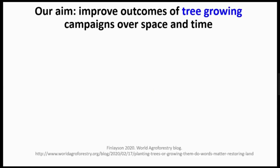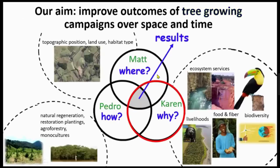A lot of current goals are about how many trees we're putting in the ground. But if we want benefits like carbon sequestration, biodiversity conservation, and human livelihood improvements, those trees need to survive on the landscape. We should be thinking about how we can grow trees and make sure they're there multiple decades into the future. To do that successfully, we need to start by thinking about why we're doing the tree growing, and then think about where and how to do that — which is what Matt and Pedro will address.